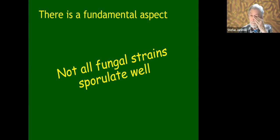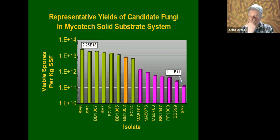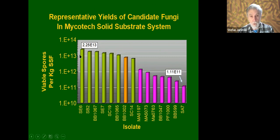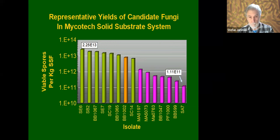These are the spore production figures under the same conditions and same substrate: the best strains are producing 2.25×10¹³ conidia per kilogram of substrate, while the worst strains are 1/100 of that. The commercial GHA isolate produces about 1×10¹³ spores per kilogram. Here's another example: these are Metarhizium isolates from a project I conducted in the Azores, looking for a good Metarhizium for combating the invasive Japanese beetle Popillia japonica on those islands in the middle of the Atlantic Ocean, which are part of Portugal.